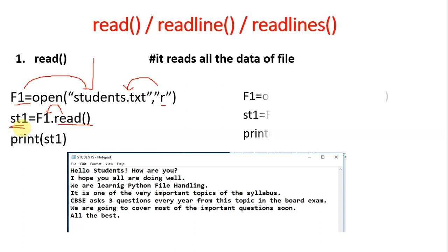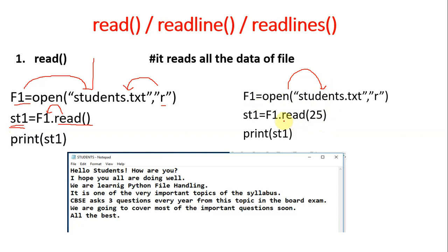Now there's a small change to the program. We open the same file but inside the read function we pass an argument — 25. So f1.read(25) will read the first 25 bytes, or first 25 characters of the file. For example: H-E-L-L-O is five characters, then space counts as six, and so on up to 25 characters. It stores the result in st1 and prints it.